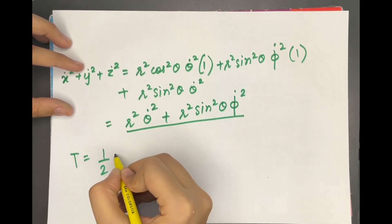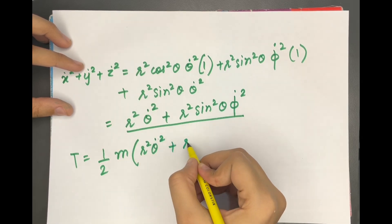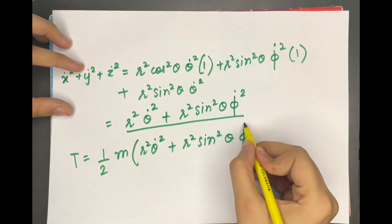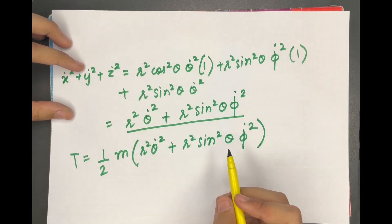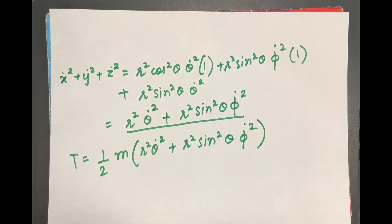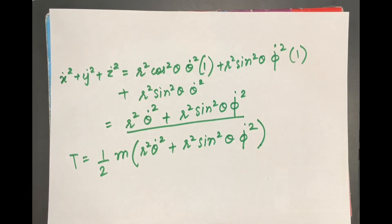So the kinetic energy T becomes ½m(r² θ̇² + r² sin²θ φ̇²). You can write this equation of kinetic energy directly if you want to, but I prefer solving it because there are many chances of making a mistake while memorizing, so it's better to solve it and show the examiner that you know how it was derived.